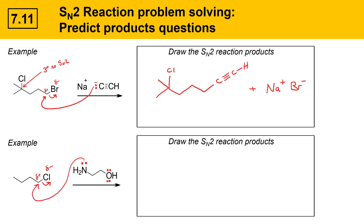The nucleophile attacks the alkyl halide carbon and the leaving group leaves. The product is one where nitrogen has become bonded to the alkyl halide carbon. Nitrogen still has two hydrogens attached and acquires a formal positive charge. The Cl⁻ is the counter ion for that species.